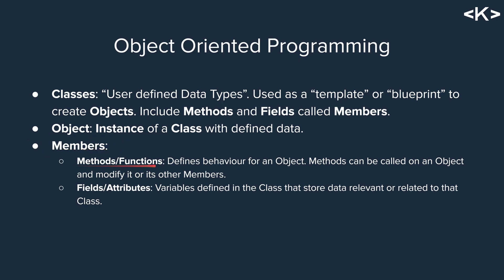Members of a class can be methods or functions. There's a lot of debate about what is a method versus a function, but in most cases you can use them as synonyms. For beginners it's totally fine to say either — I personally prefer 'methods.' Methods or functions define behavior for an object; they can be called on an object to modify it or its members. For example, a birthday method, when called, might increment an age field. A field or attribute is basically a variable defined in the class that stores relevant data — like storing age as an integer in a person class.